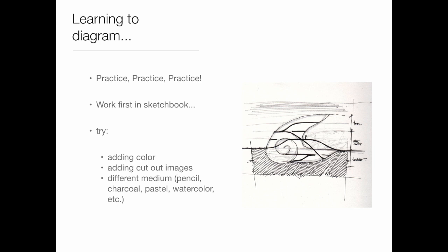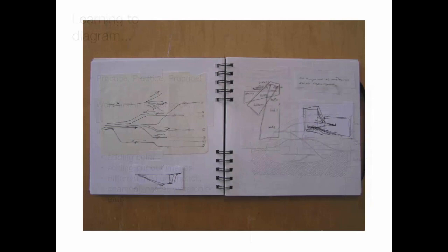As you learn to diagram and figure this process out, try working in a sketchbook. Sketches are essentially very close to diagrams, and you can get used to practicing your diagramming in a sketchbook easily. You can try adding color, cut out images and paste them together — collage tends to work really well. Sometimes just changing from a pen to a pencil, you don't even have to have color. Just changing medium can make a really big difference. If you like to watercolor, you could watercolor.